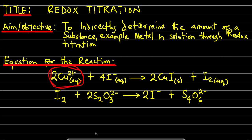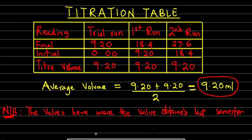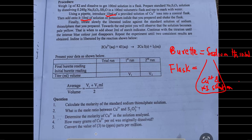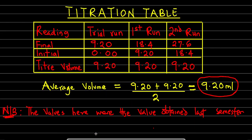This titration table — every titration has one. You can see the empty titration table here. When you carry out the titration it's going to look like this. The values we have on the screen were obtained last year during your practical, so apparently this year they may not be the same.